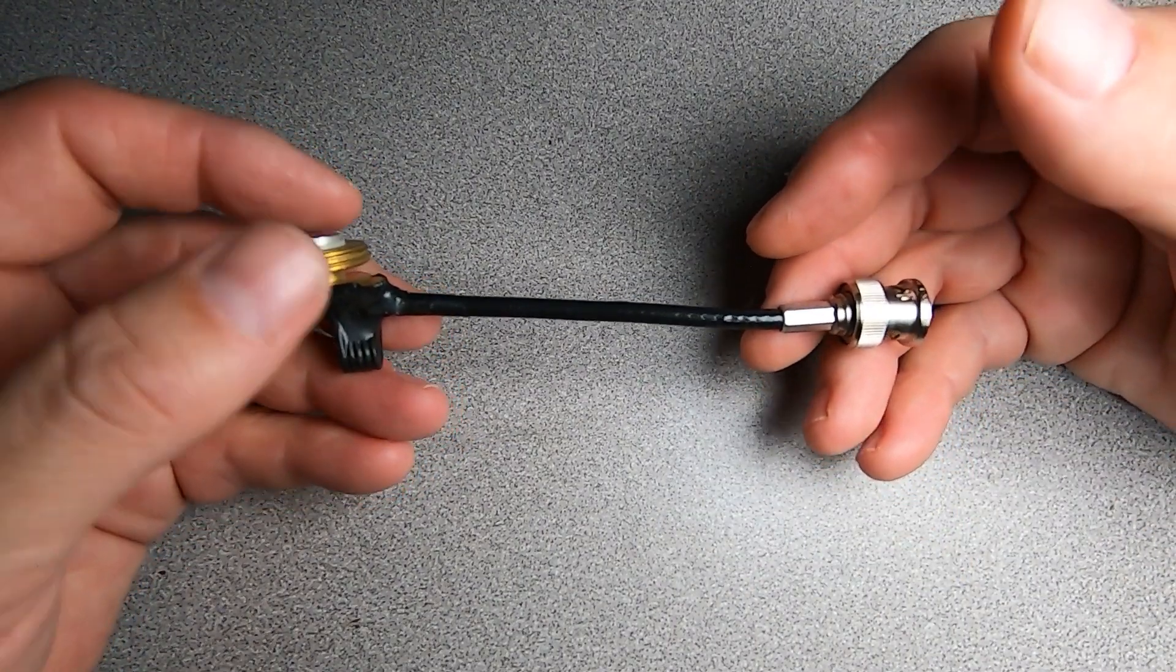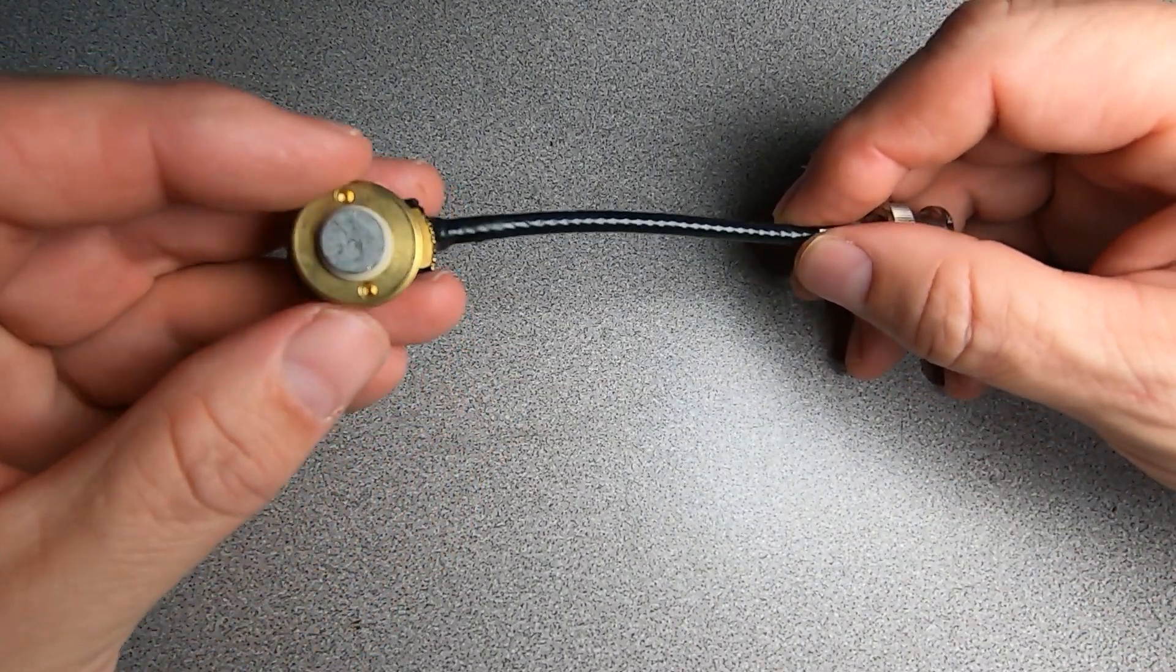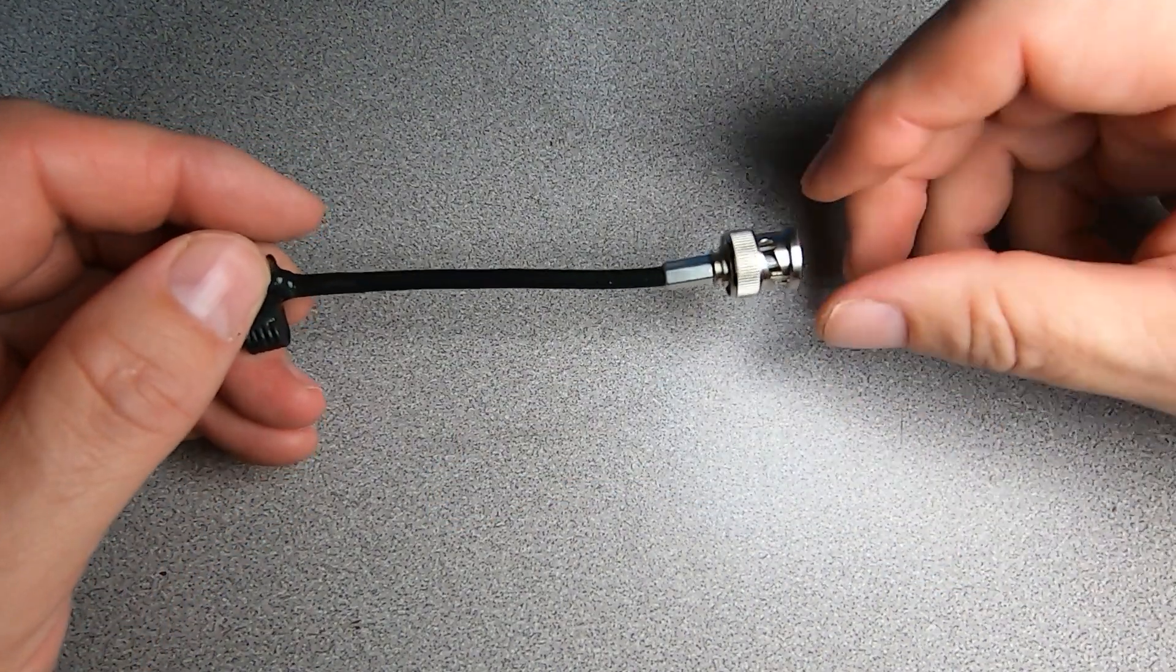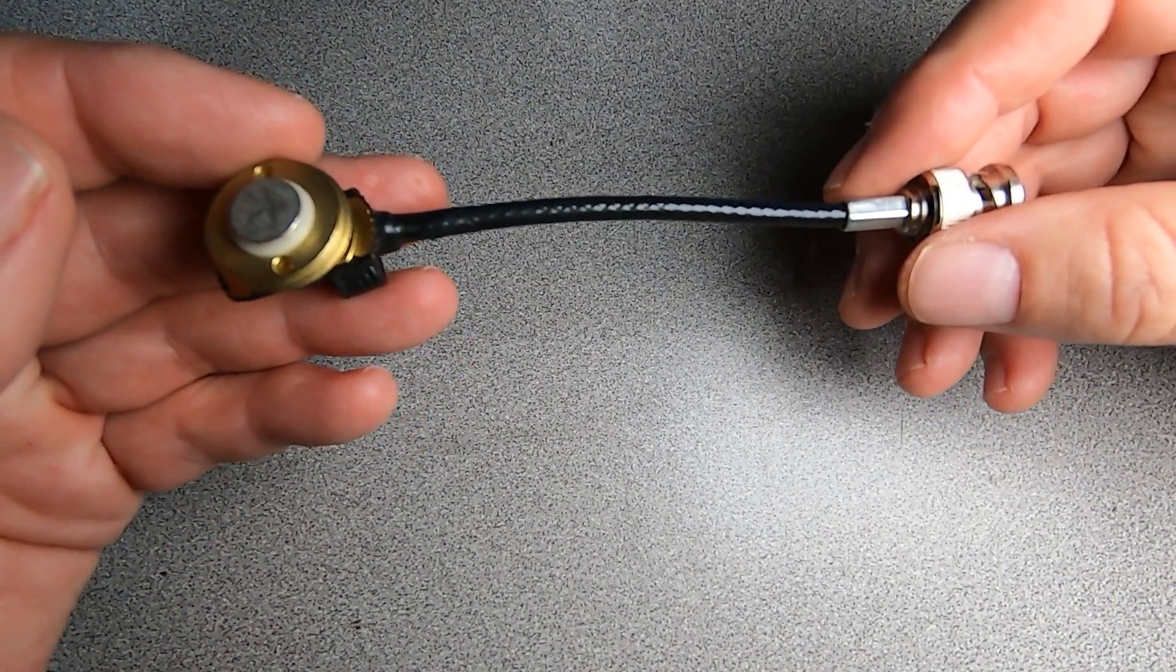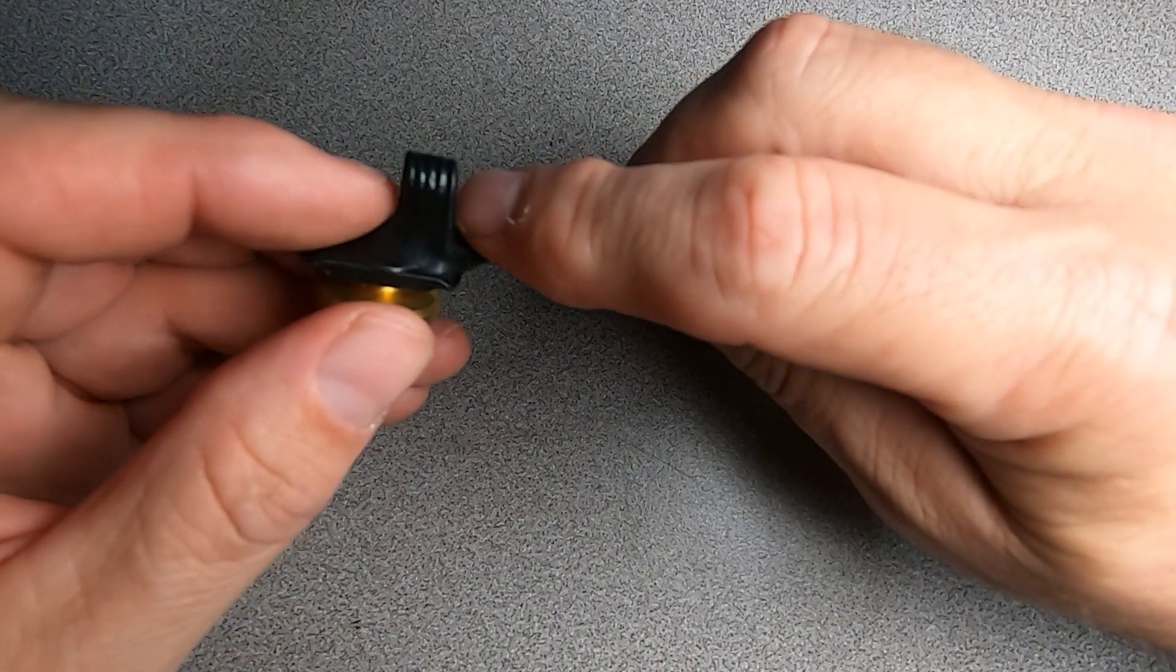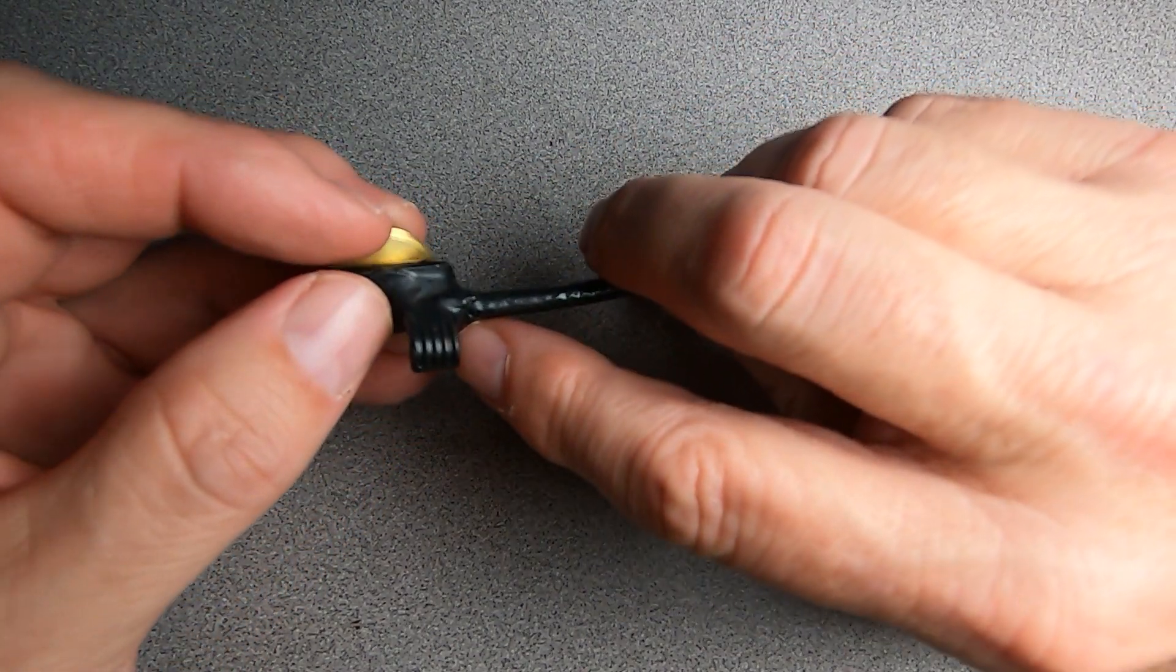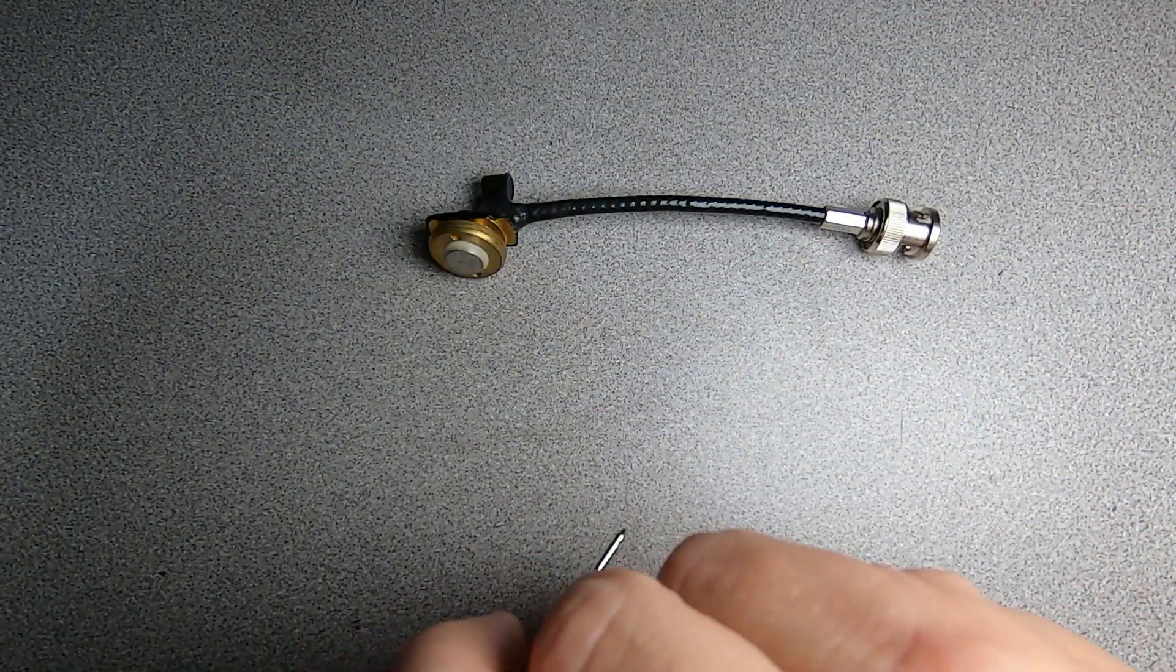Now this is where things get interesting. We have a short section of RG58 tied to our NMO mount, terminated in a BNC male that interfaces to our diplexer, and then we install this entire assembly up in the headliner. What makes it unique is that we have this small inductor that they've tied across our NMO mount.